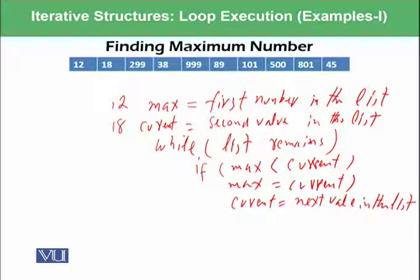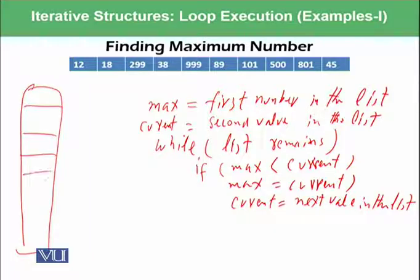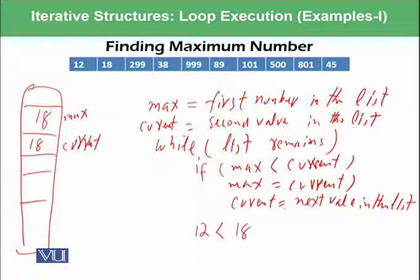Let's try to execute it. We have RAM over here. Max has initially 12 and current has initially 18. While list remains, yes, list remains. If max is less than current, 12 is less than 18, condition is true. So current is assigned to max, so max becomes 18. And current is pointing to the next value, so current is now pointing to 299.